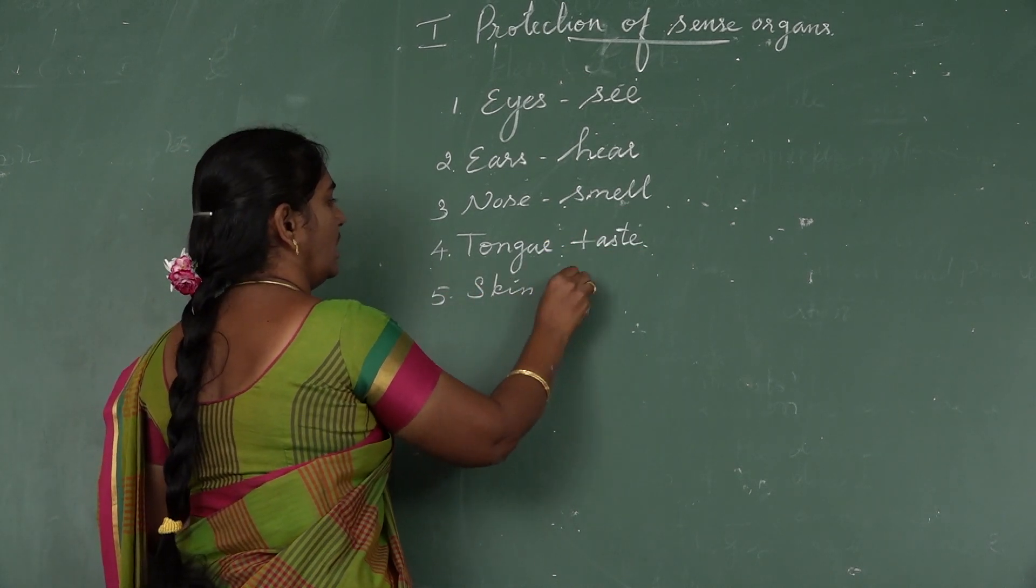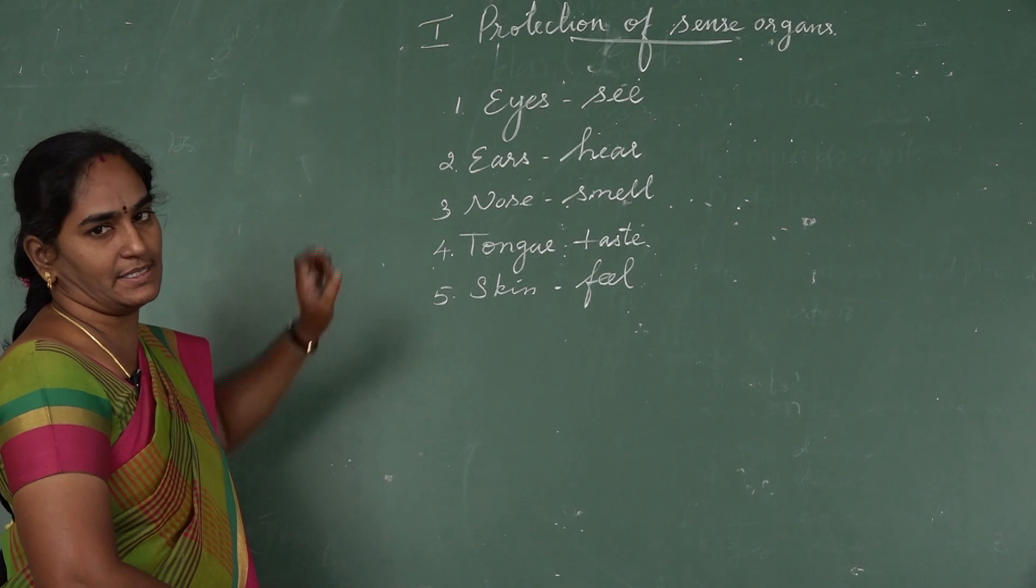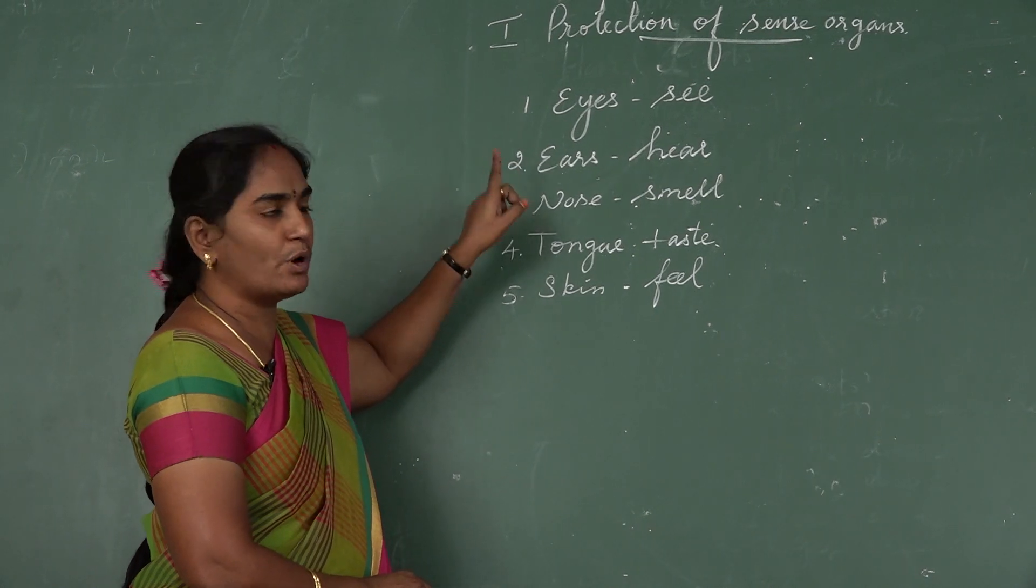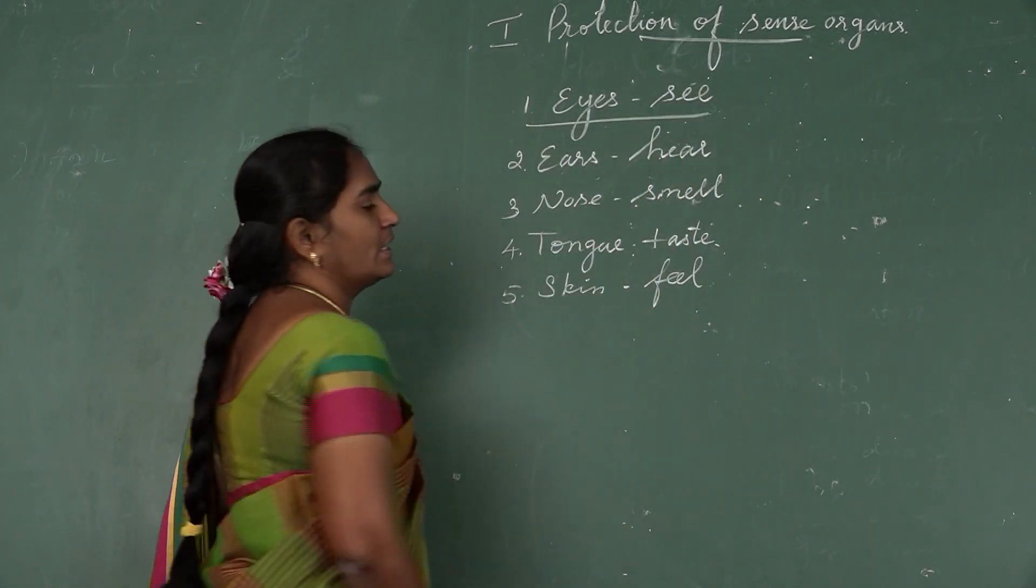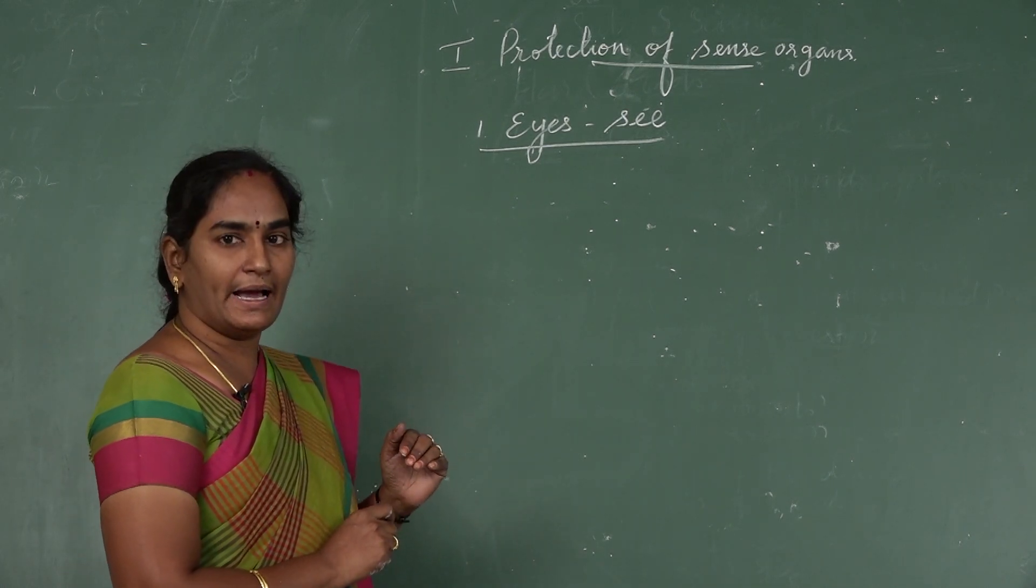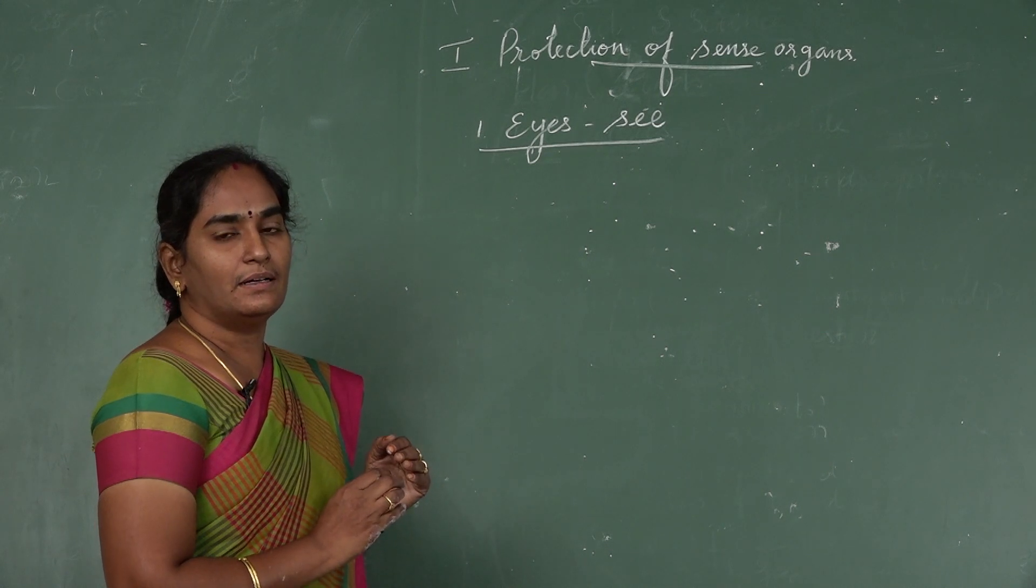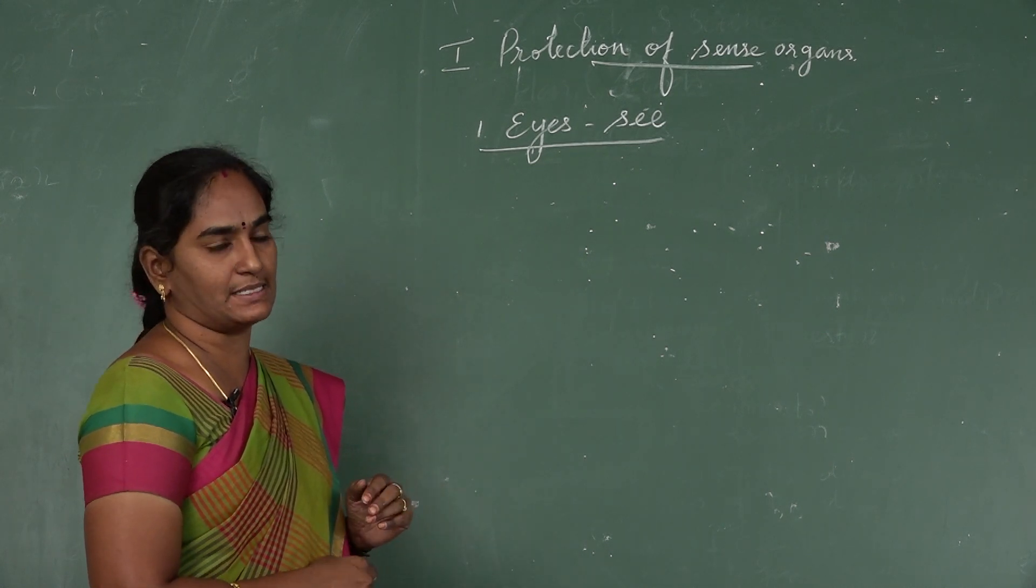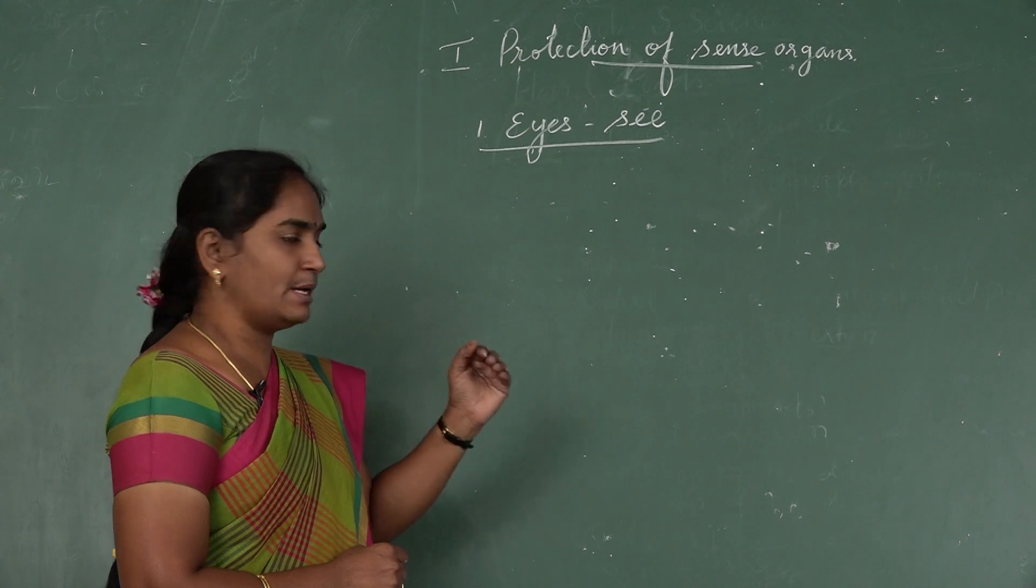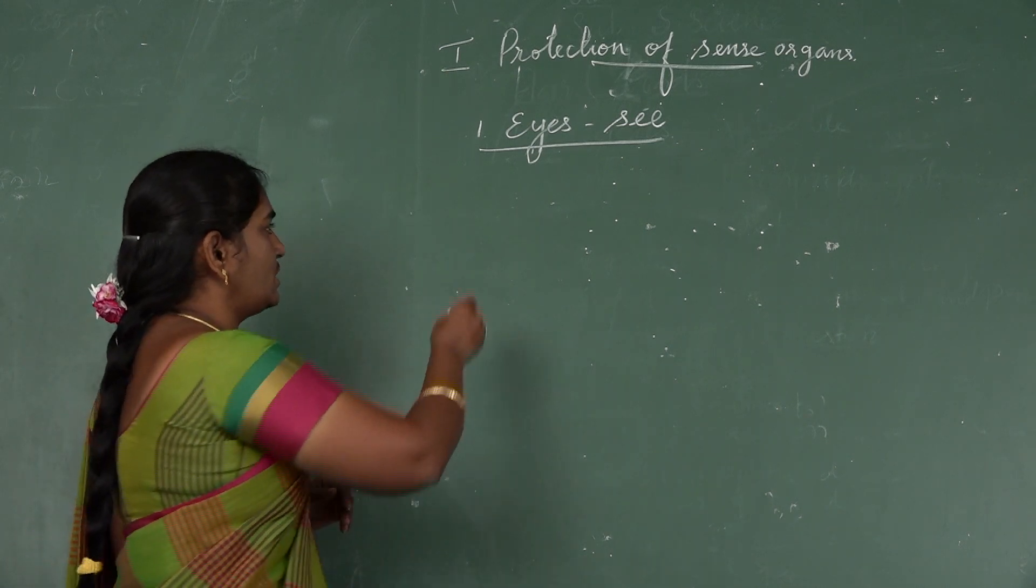Skin helps us to feel. These are the specific functions for sense organs. Now we want to see how to protect these sense organs. We want to see now one by one. First we want to see eye. By nature the eyes have eyelids and eyelashes that protect eyes from the dust and foreign particles. But we want to do some activities for the protection of eyes and we want to not do some activities.